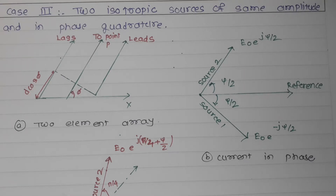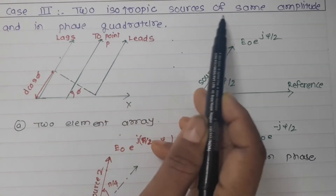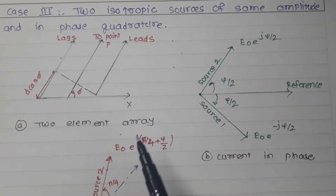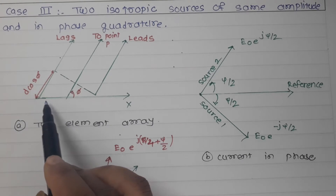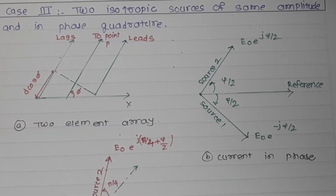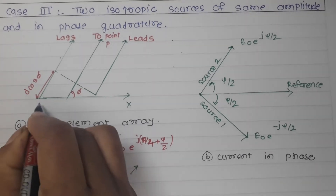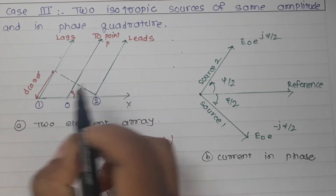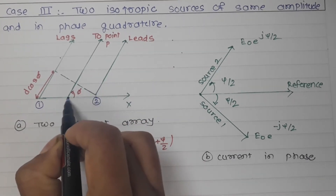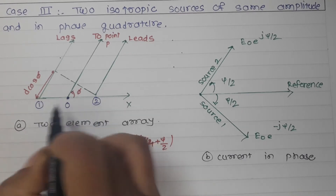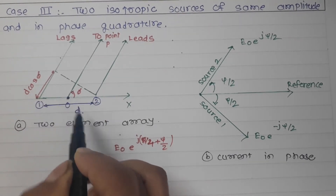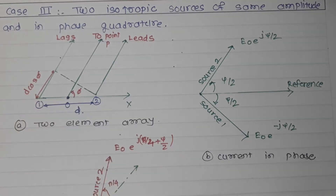In today's session we are going to discuss Case 3: two isotropic sources of same amplitude and in phase quadrature. Here we have source one and source two, with the origin placed at the center of these two sources. The complete distance between them is d, and each source is at a distance d/2 from the origin.